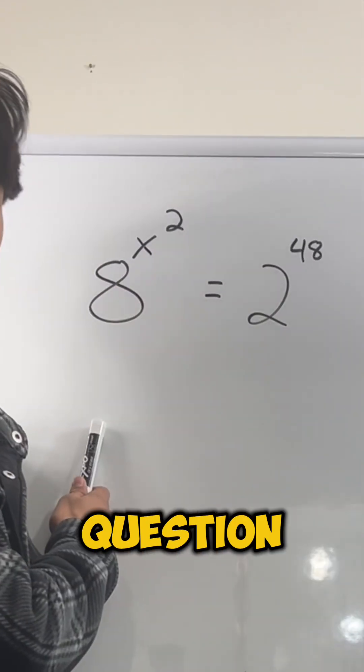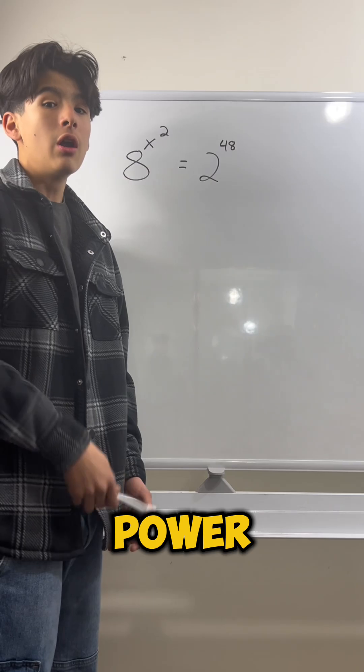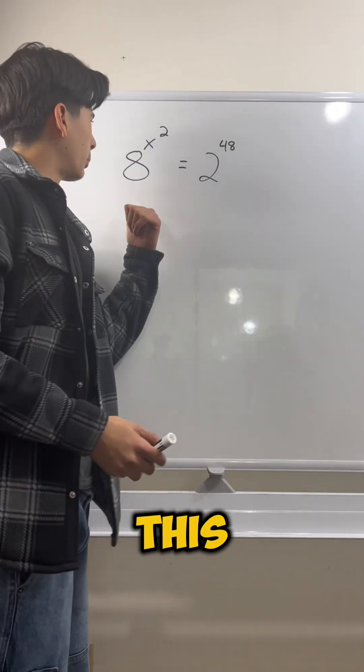Do you know how to solve this SAT question? 8 to the x squared equals 2 to the 48th power. Well, it's actually really simple. Let's look at this problem.